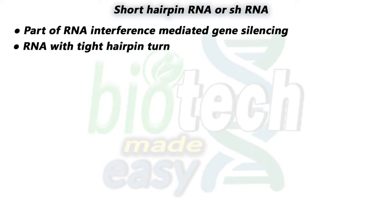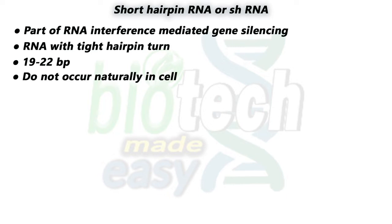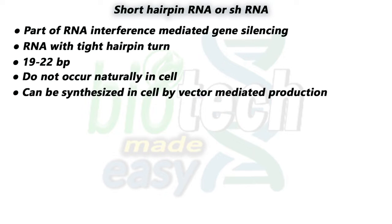shRNA is a molecule with a hairpin turn. To make this hairpin loop, two complementary sequences are linked or paired by a short loop of 4 to 11 nucleotides. This structure resembles the naturally occurring microRNA. The size of mature shRNA is 19 to 22 base pairs. shRNAs are artificial RNA molecules and are not found naturally in any cell. These are synthesized through vectors — bacterial, viral, or plasmid vectors can be used.